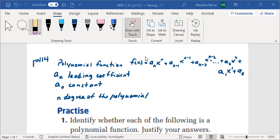If we take a look, the last number can be a constant, which is a base 0, and n is the degree of the polynomial.